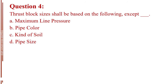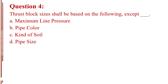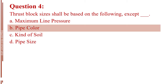Question number 4. Thrust block sizes shall be based on the following, except blank. Letter A, maximum line pressure. Letter B, pipe color. Letter C, kind of soil. Letter D, pipe size. The answer is Letter B, pipe color.